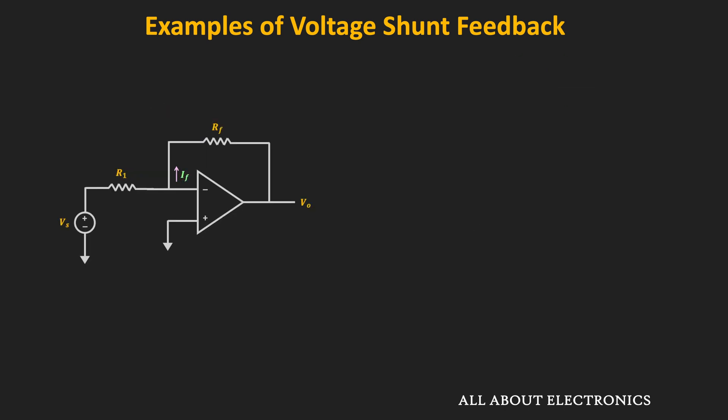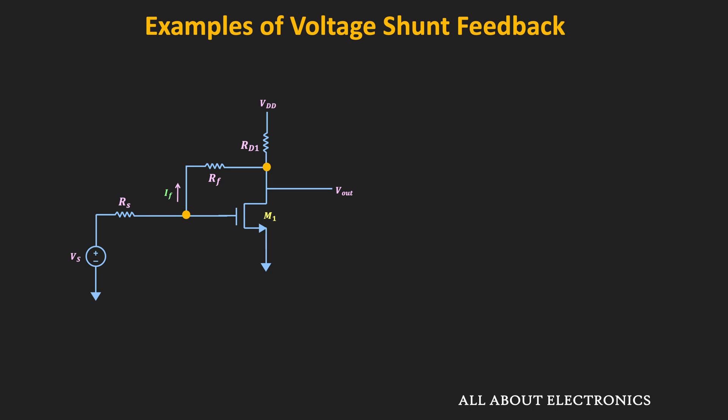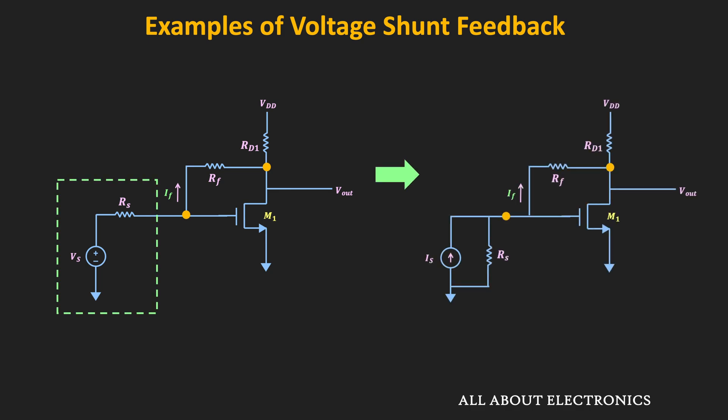Similarly, the inverting op-amp configuration is also an example of the voltage-shunt feedback. You might ask: in the voltage-shunt feedback, we have a current source as input — so how does this circuit qualify? If you see the voltage source and the resistor, using source transformation it can be converted into a current source, where Is equals Vs divided by R1. That is why this is also an example of voltage-shunt feedback. Similarly, the common-source amplifier with drain feedback is also an example of voltage-shunt feedback, because using source transformation the voltage source can be converted into a current source, with Is equals Vs divided by Rs.